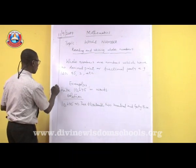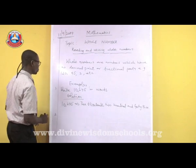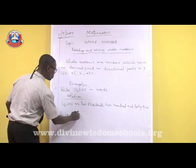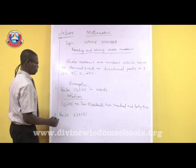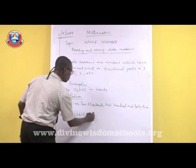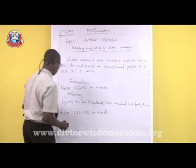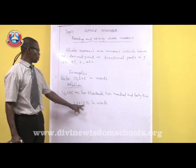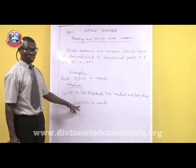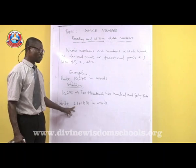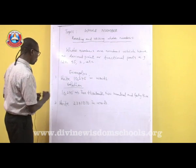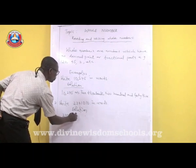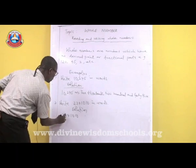Let's look at another example. Write 2,341,010 in words. Again, you consider the place value of each digit. Here we have units, tens, hundreds, thousands, tens of thousands, hundreds of thousands, and then we move over to millions.